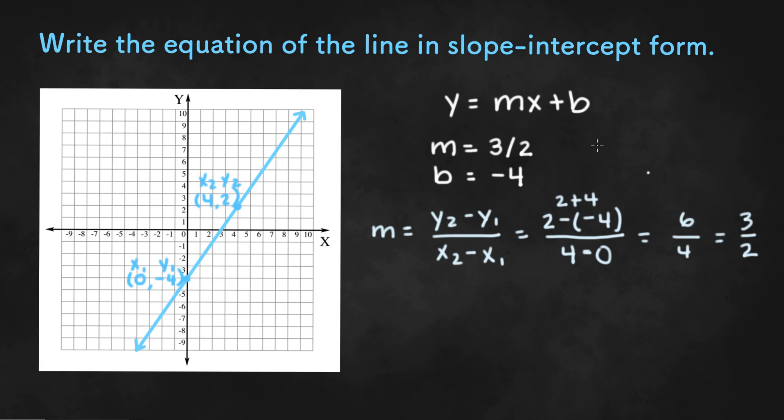So that's the two ways we can find the slope. Now that we have the slope and the y-intercept, we need to plug it back into the original slope-intercept form. So our final answer will be y equals 3 halves x minus 4.